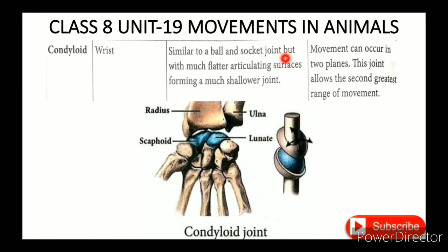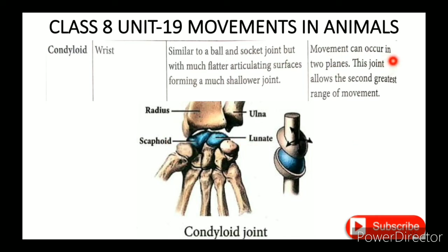The condyloid joint is similar to the ball and socket joint, but with much flatter articulating surfaces forming a much shallower joint — for example, the wrist. Movement can occur in two planes. This joint allows the second greatest range of movement.